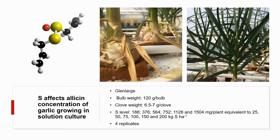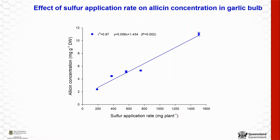To identify the effect of sulfur on allicin concentration, I conducted another experiment in a solution culture. The results show that allicin concentration had a linear regression with the sulfur application rate, and the highest allicin concentration was about 13 milligrams per gram in dry weight basis when applying 1,500 milligrams per plant.